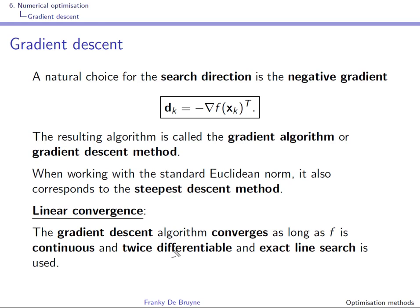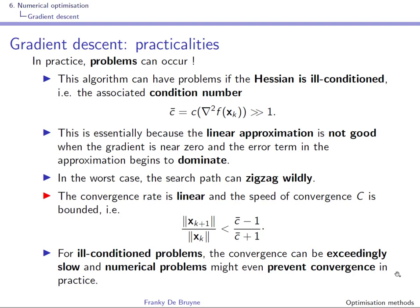The good news is that the gradient descent algorithm converges as long as f is continuous and twice differentiable, assuming exact line search. The less good news is that the convergence is only linear: r = 1 with c < 1. If c approaches one, convergence can be very slow.